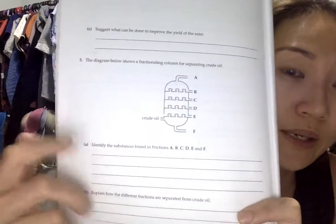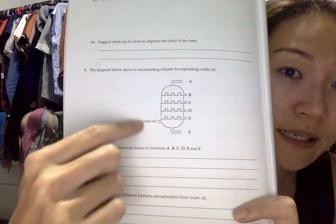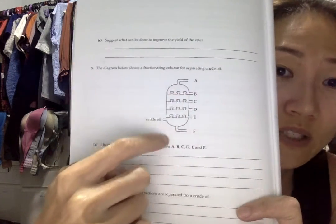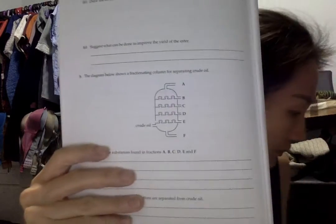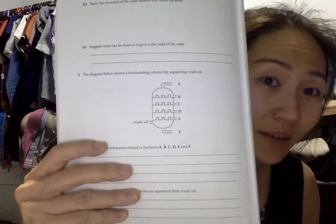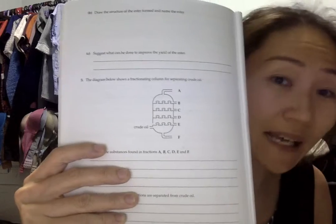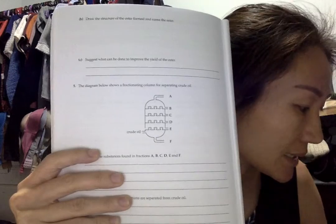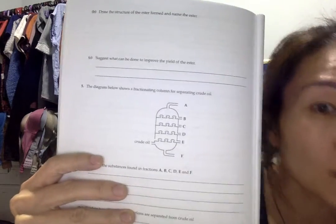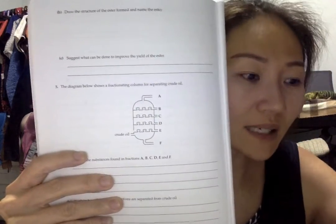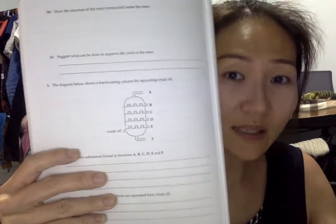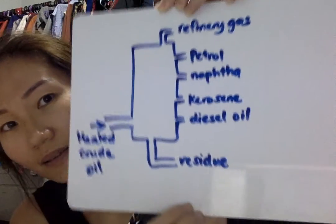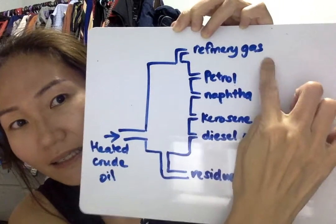For question five, you have these different fractions here: A, B, C, D, E, and F, and you're supposed to identify these fractions. So what are these fractions? A is refinery gas, B is petrol, C is naphtha, D is kerosene, E is diesel oil, and F is residue.